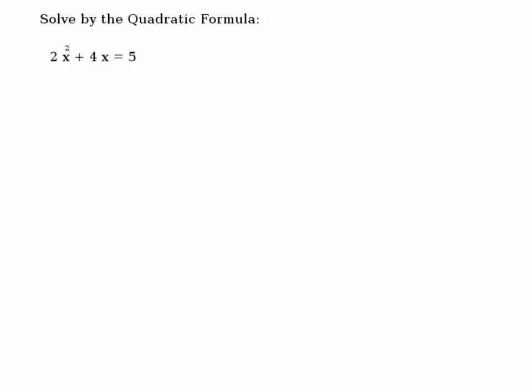Solve by quadratic formula. We have ax² + bx + c = 0. x would be equal to, you need to know the formula, minus b plus and minus square root of b² minus 4ac divided by 2a.